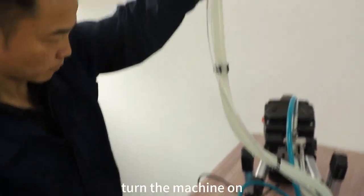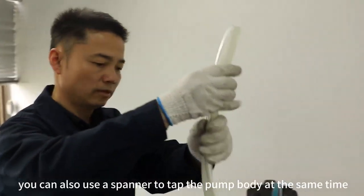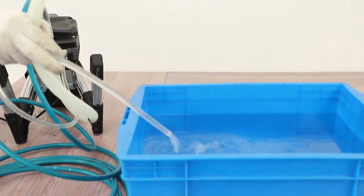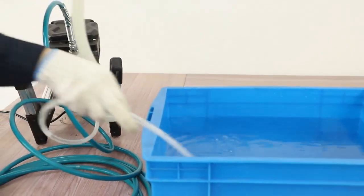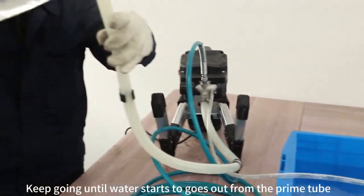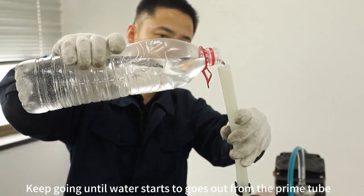At this point, turn the machine on. You can also use a spanner to tap the pump body at the same time. Keep going until water starts to ooze out from the prime tube.